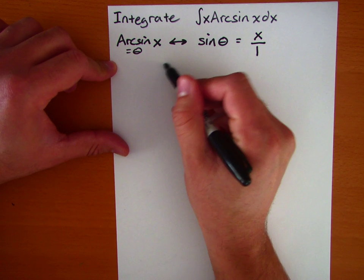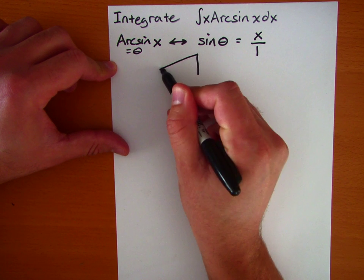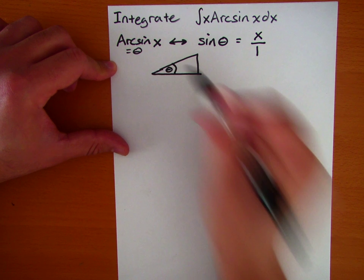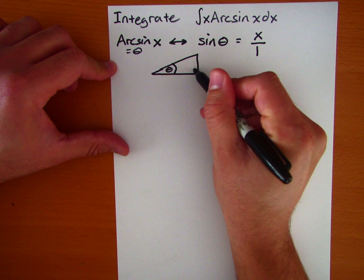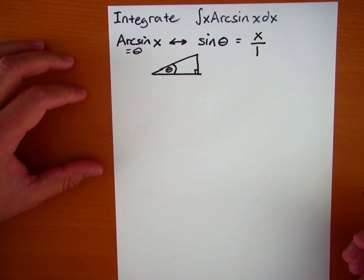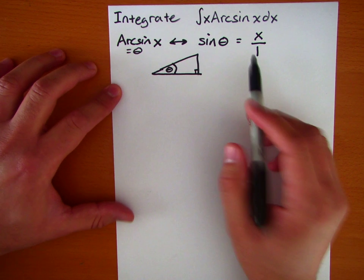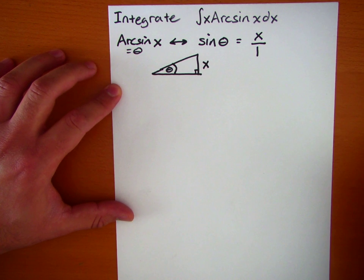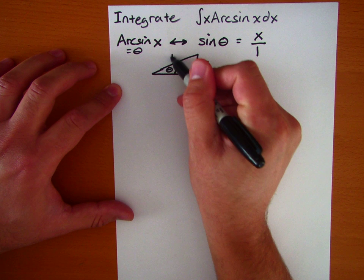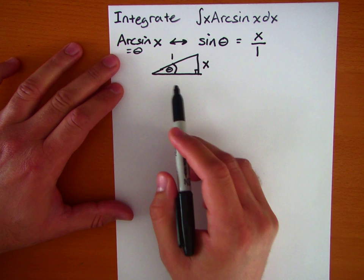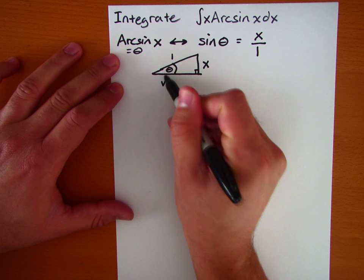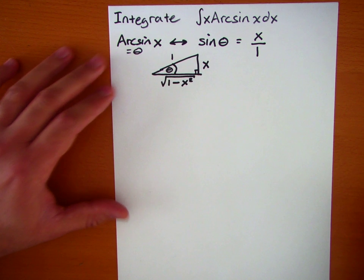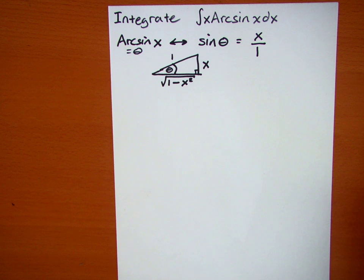That triangle looks a little something like this. If we take an arbitrary right triangle with angle theta, we have arcsine of x, which implies sine of theta equals x over 1 — that's opposite over hypotenuse. So the opposite side is x, the hypotenuse is 1, and by the Pythagorean theorem the adjacent side is √(1 - x²).